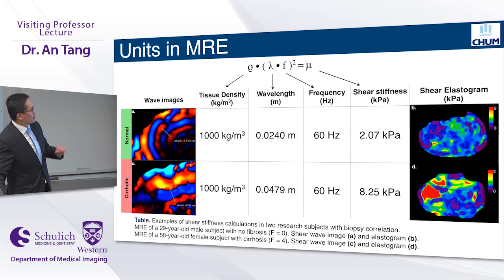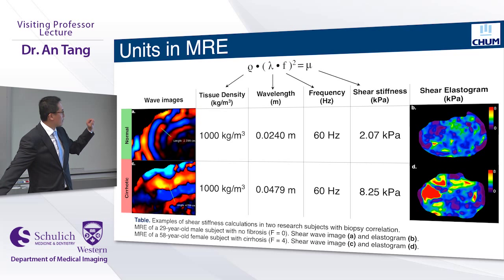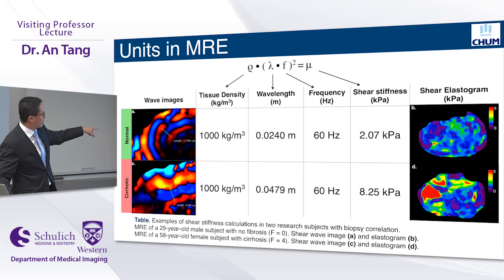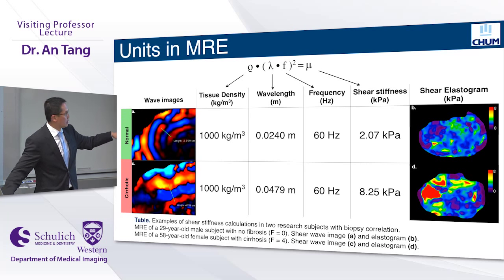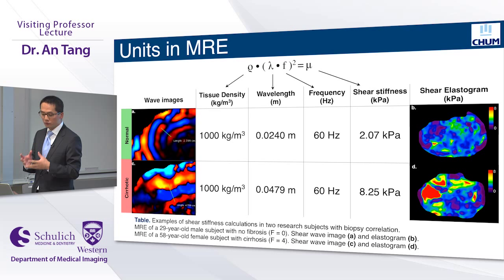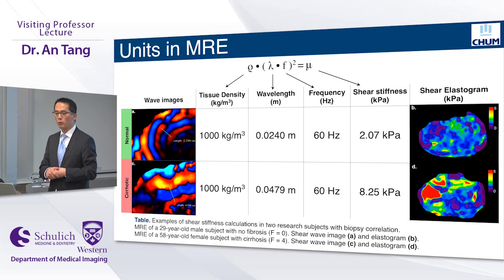Here are some images. On the top row, a patient with a normal soft liver — I've manually measured the wavelength between two red peaks. At the same scale in a cirrhotic patient, the wavelength is very elongated. Based on assumptions about tissue density, measurement of wavelength, and known frequency, we can calculate the shear stiffness. On the right are elastograms: a normal soft liver on top and a stiff cirrhotic liver on the bottom.